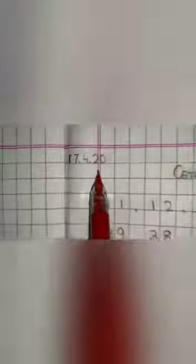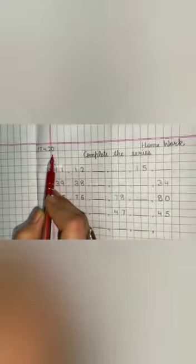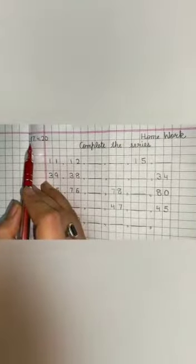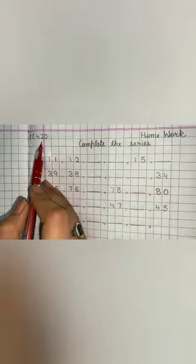What is the date today? Today is 17 April 2020. 17 April 2020. You will not say 17.4.20. You will say today is 17 April 2020.